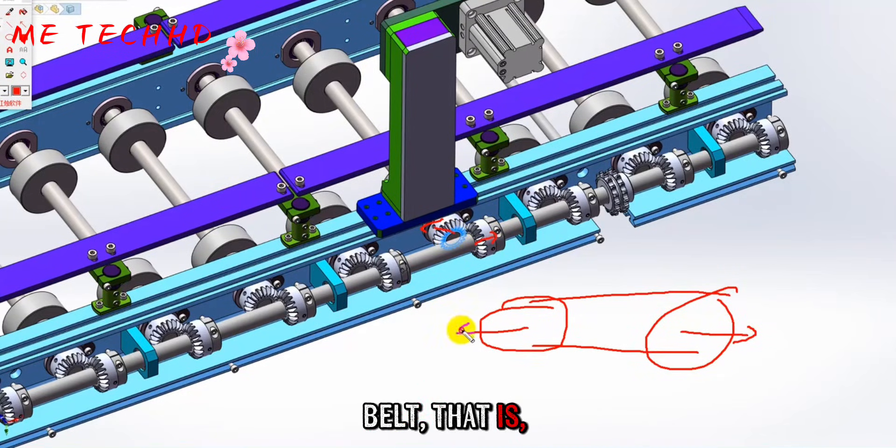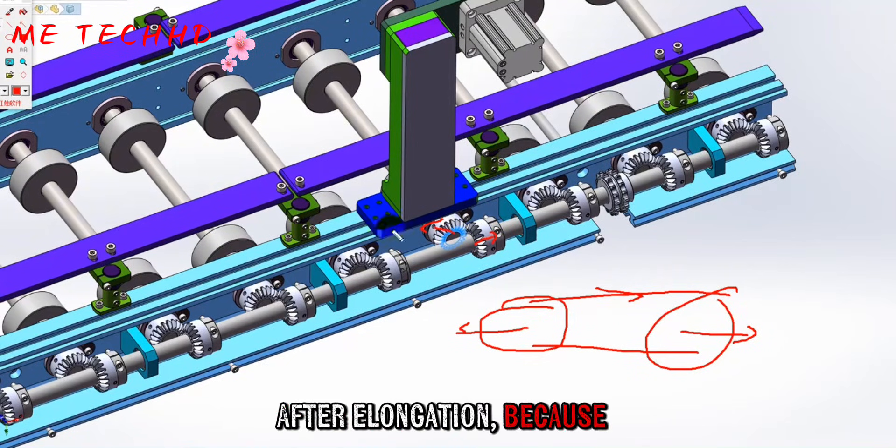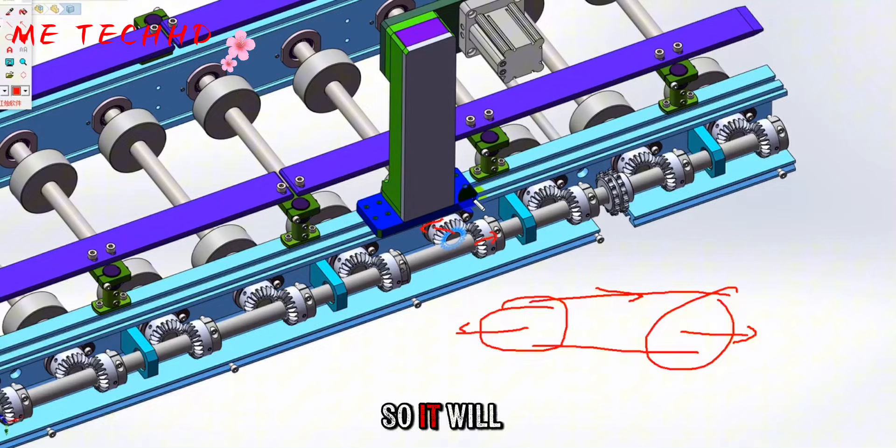That is, for example, the belt or chain is lengthened. After elongation, because this one has no tensioning mechanism, it will wear out.